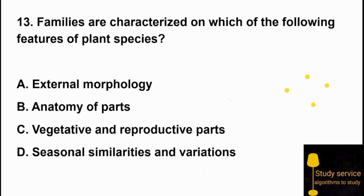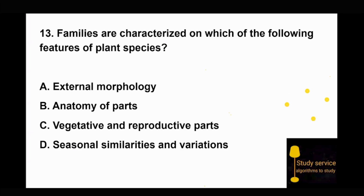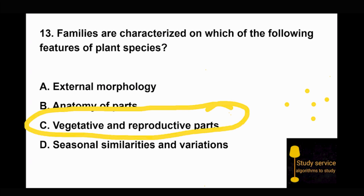Question 13: Families are characterized on which of the following features of plant species? Option A: external morphology. Option B: anatomy of plants. Option C: vegetative and reproductive parts. Option D: seasonal similarities and variations. Families are named based on their vegetative and reproductive parts, so Option C is the right answer.